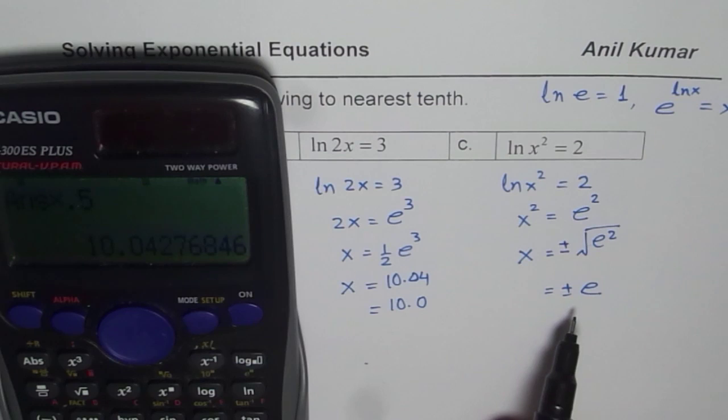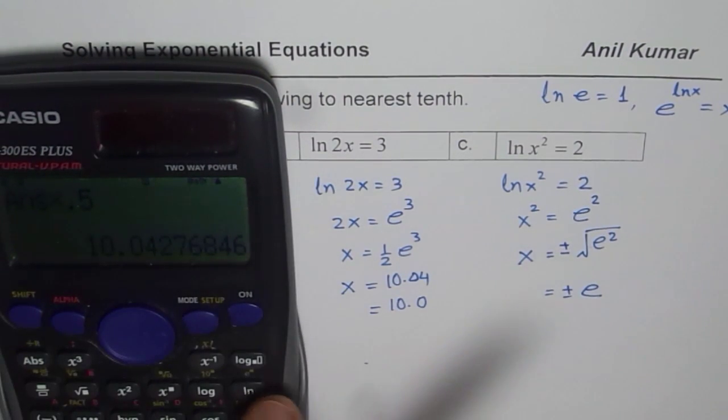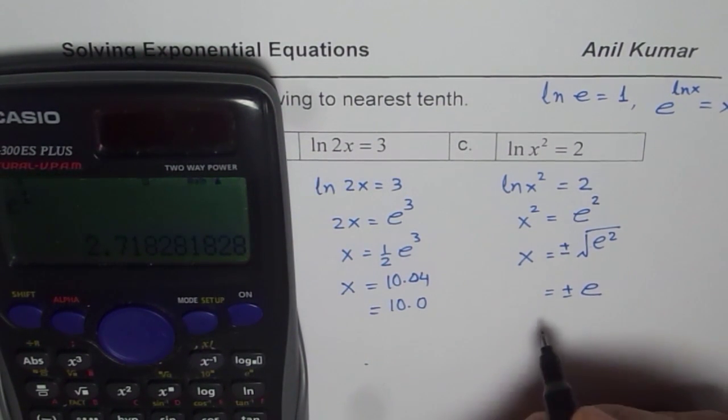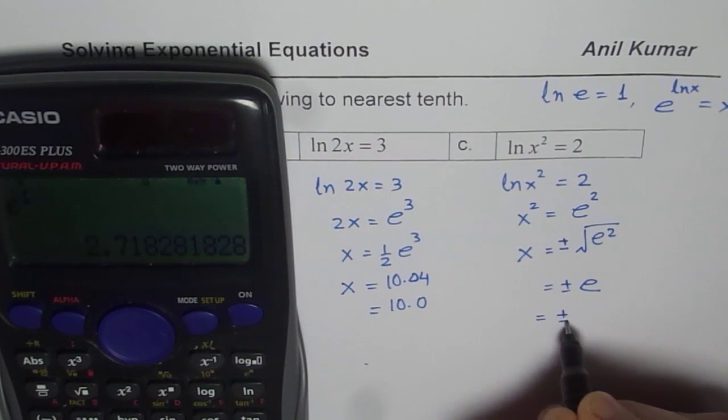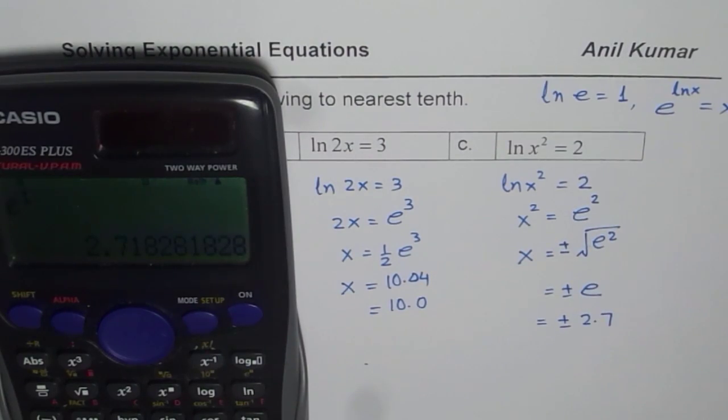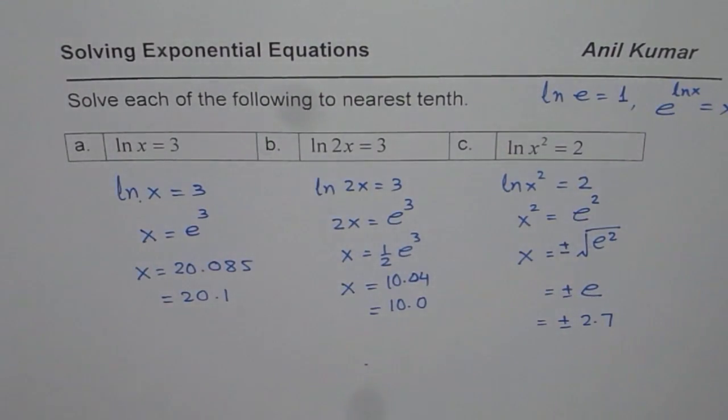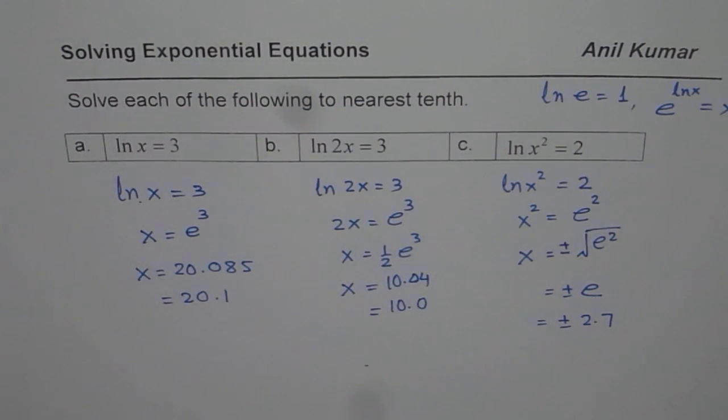Now here as you can see, it is just e. So what is e? E to the power of 1 and then you get 2.7182. So I could write this as plus or minus 2.7 rounded to 1 decimal place. So that is how you can actually answer this particular question. I hope that helps and all the best.